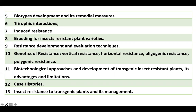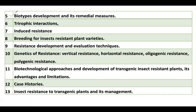Biotype is the development of a new population of insects which is capable of damaging plant species that were earlier known to be resistant. You also need to study the remedial measures — how we can protect against biotype development — some of which are sequential release, gene pyramiding, and horizontal resistance.